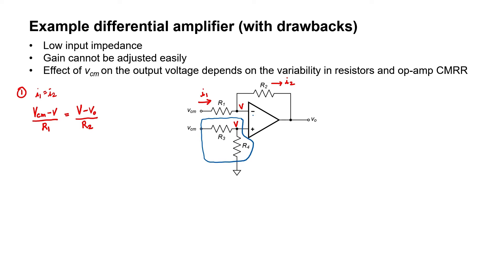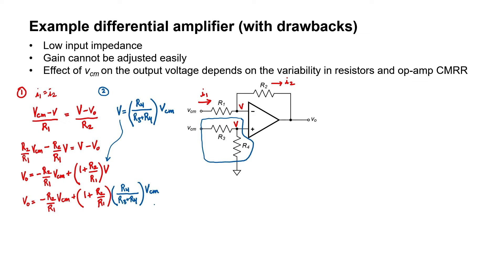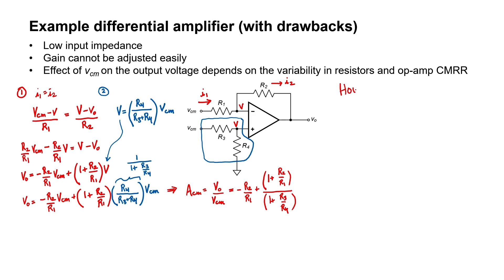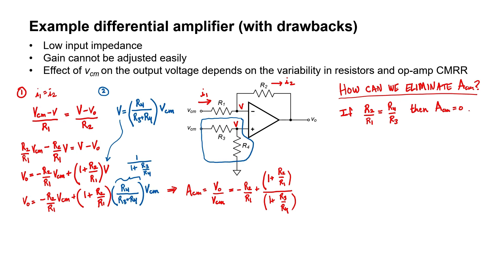Let's write V in terms of VCM. Since no current goes into the non-inverting pin, this is just a voltage divider. Let's multiply both sides by R2, then rearrange terms to isolate VO, and substitute for V. I notice this term is just 1 over (1 + R3/R4). At this point I have the output voltage in terms of VCM, so I can isolate the common mode gain — that's the output voltage divided by the common mode voltage. Our goal is to create a differential amplifier with no common mode gain at all, so let's consider how to eliminate ACM.